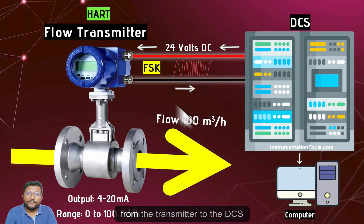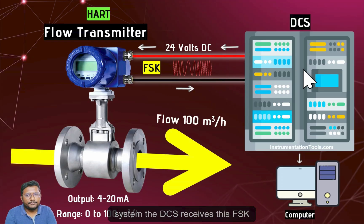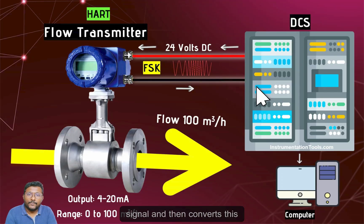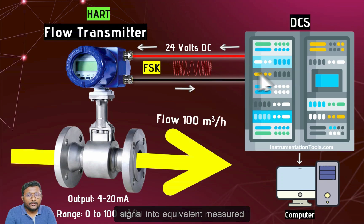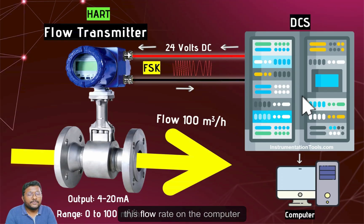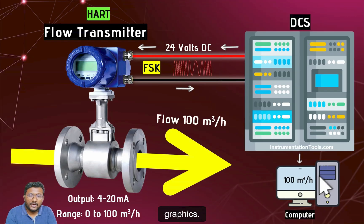We can also use the HART FSK signal. The DCS system receives this FSK signal and then converts it into the equivalent measured flow rate. The DCS then updates this flow rate on the computer graphics.